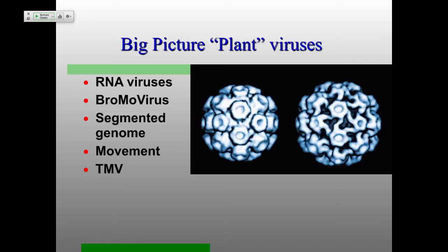Plants have a circulatory system. Getting from cell to cell is a very important process in virus infection of plants. Some of the relatively small genomes encode what are called movement proteins, involved in moving the genome around inside the cell. We'll also talk briefly about tobacco mosaic virus at the end — there's even a book dedicated to it.